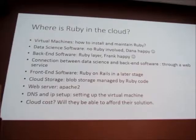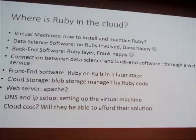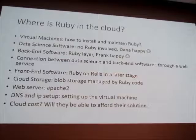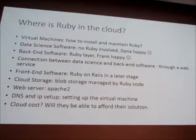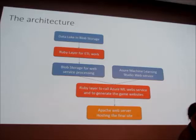Ruby will be used in virtual machines — they need to make sure they can install Ruby there. The back-end software will be Ruby layers. Frank will be happy. There's the connection between the data science and the back-end. They'll later be moving on to Ruby and Rails for the front-end. For cloud storage, they will be looking at blob storage. The web server will be Apache 2, and they still need to figure out the DNS, IP setup, and cloud costs.